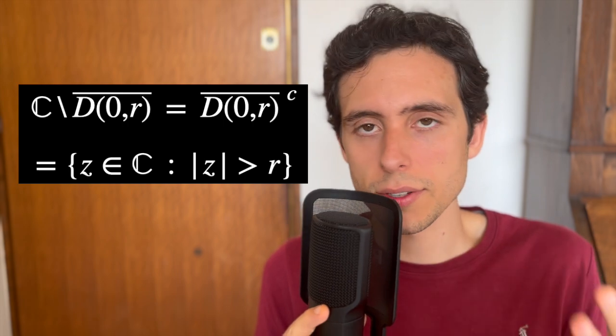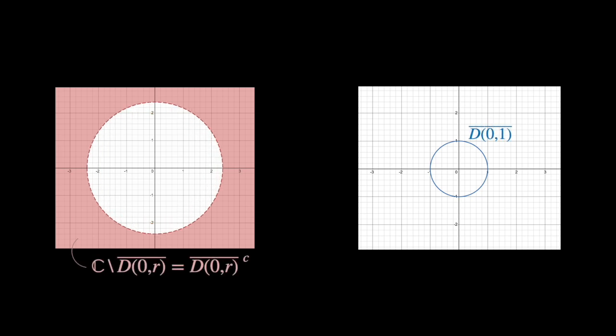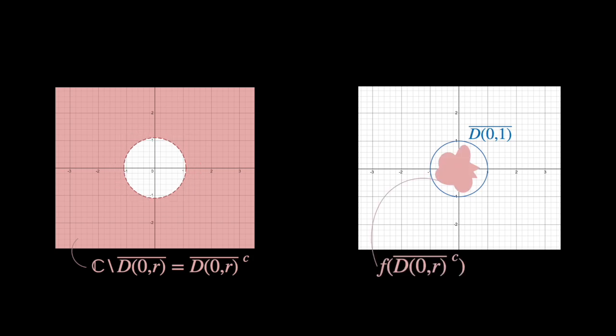If we consider the complement of the closed disk with centering 0 and radius r, such that this radius is large enough, then its image under the mapping f is this. So, let's see how this function acts on the set. First we have here the complement of the closed disk with radius r and centered in 0. And we know that its image is going to be inside of this closed disk centered in 0 and with radius 1. In fact, it's going to be something like that. That's the image of it. But we can see how it is bounded by the unit circle. So, its image is contained inside of this closed disk.